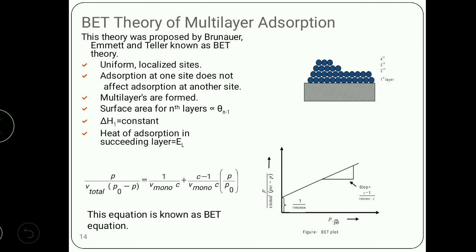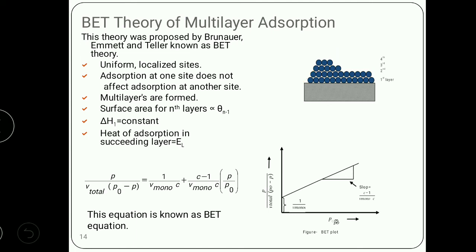Now BET theory of multi-layer adsorption. This theory was proposed by Brunauer, Emmett, and Teller in 1938, also known as BET theory. The assumptions they provided are: surface of the solids is uniform and has localized sites — same as the Langmuir adsorption equation. Adsorption at one site is independent and does not affect adsorption at another site. One of the most important assumptions is that there is formation of multi-layer. In the figure you see the solid surface where the first layer is adsorbed on the surface of the solid, the second layer sits on the sites available on the first layer, the third layer on the second layer, and so on, such that the nth layer will occupy the surface available in the (n-1)th layer.